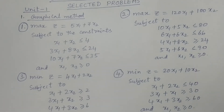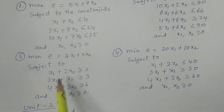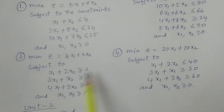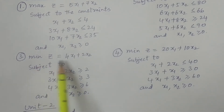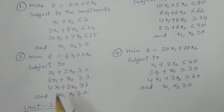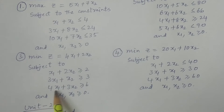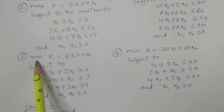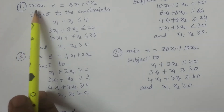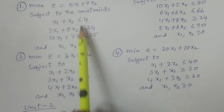I also suggest two problems in minimization. These problems are enough for the graphical method, and you will get almost the same kind of problems. Minimize z = 4x1 + 2x2, subject to x1 + 2x2 ≥ 2, 3x1 + x2 ≥ 3, 4x1 + 3x2 ≥ 6, and x1, x2 ≥ 0. All the constraints are greater than or equal to in the minimization case.